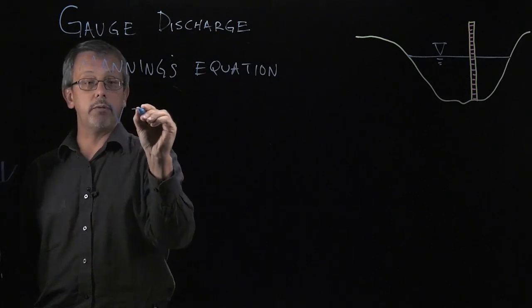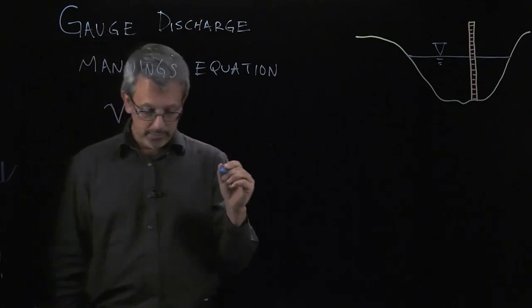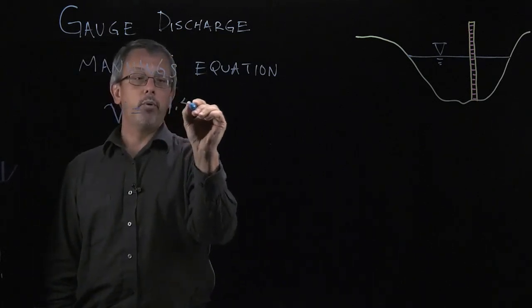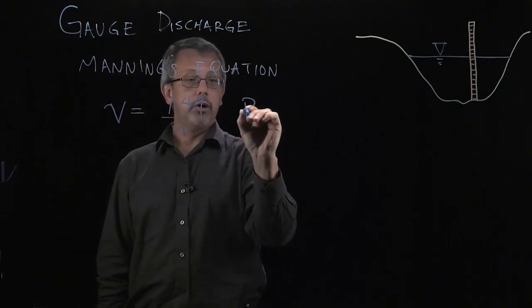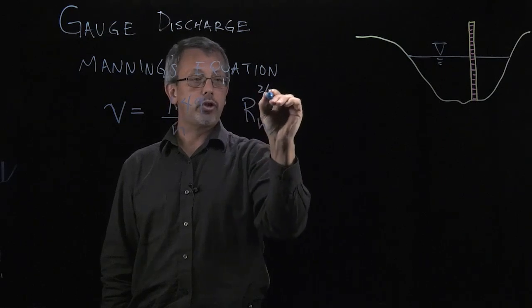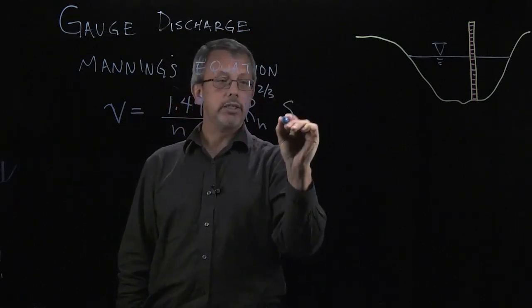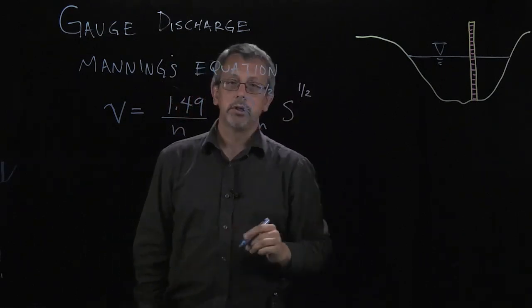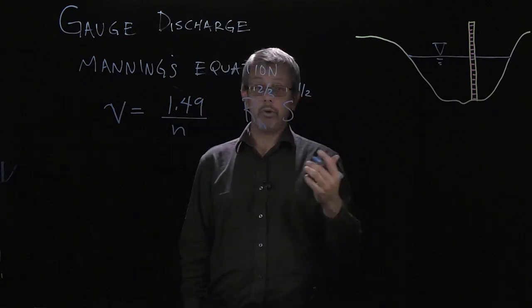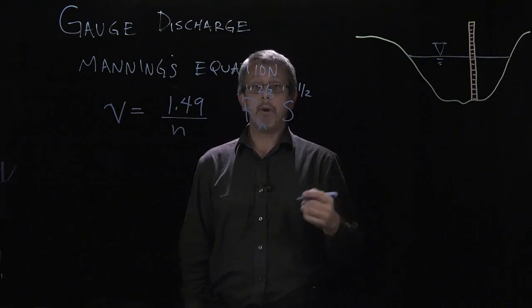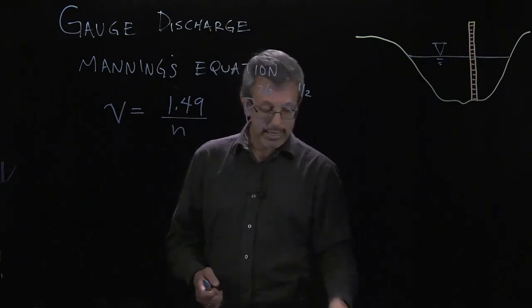Here's the first part of Manning's equation where V equals 1.49 over N, we'll leave a little space there, RH to the two-thirds S to the one-half. Now we have some very interesting exponents involved here plus a few other things that are balanced in here. So let's talk about what each piece of this equation actually is.